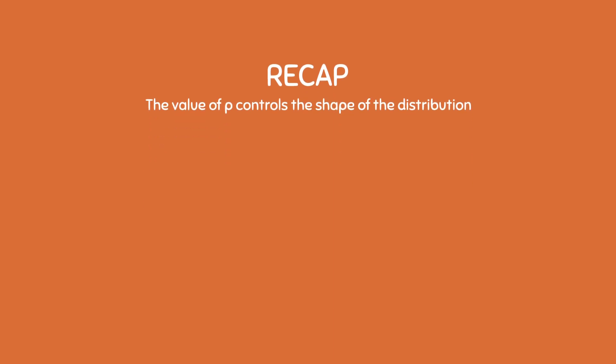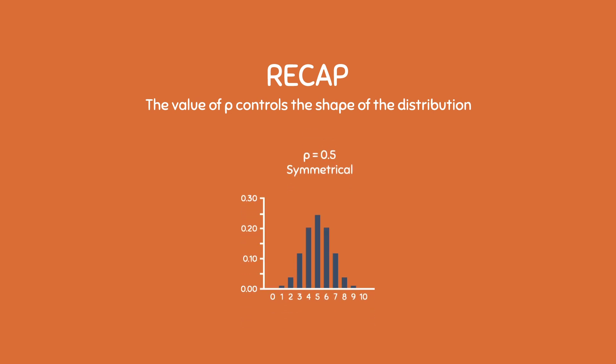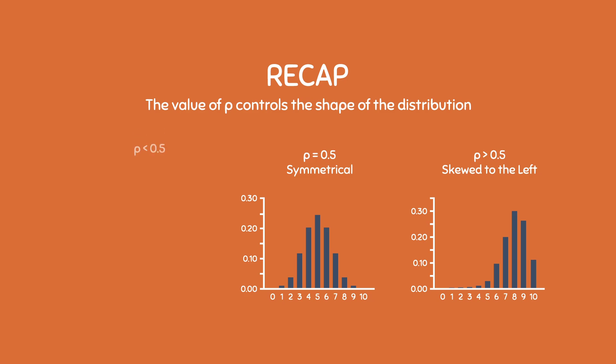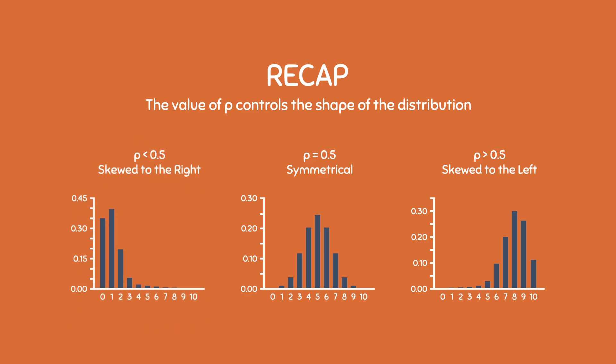So let's quickly recap what we've learned. The value of p controls the shape of the distribution. When the probability of success is equal to 0.5, it gives us a symmetrical distribution, but when the probability of success deviates from 0.5, it gives us a skewed distribution. A value of p greater than 0.5 tends to be skewed to the left, and a value of p less than 0.5 tends to be skewed to the right.